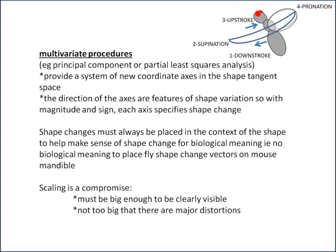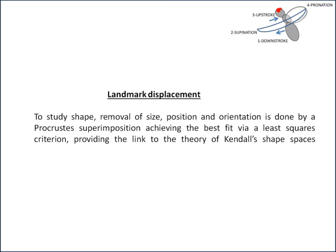We'll look at the pros and cons of different methods, starting with landmark displacements. To study shape you need to remove size, position, and orientation, and this is done via a Procrustes superimposition, which achieves the best fit via a least squares criterion.